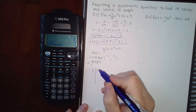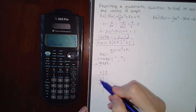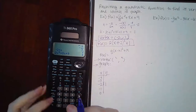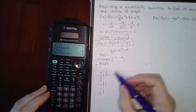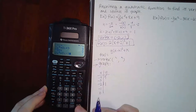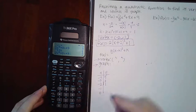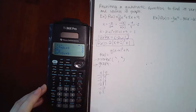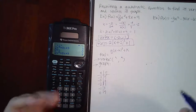To graph, put the vertex (-2, 1) in the middle of the table, pick two x-values smaller and two greater, and plug them in to find y-values: plugging in -4, -3, -1, and 0 gives 9, 3, 3, and 9. Plot those points, then hit the graphing button to draw the parabola.